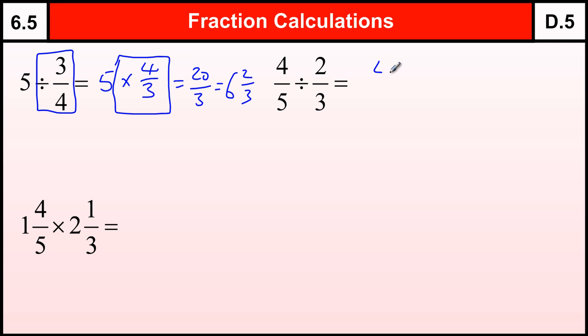Dividing a fraction by a fraction, we leave the first fraction. This is the bit we're interested in. Dividing by two-thirds, we change that into times by two-thirds upside down, which is three over two. And then we can just times the top, which is twelve, and the bottom, which is ten. And then we can cancel it, divided by two top and bottom, to give us six over five, which is one and one-fifth.